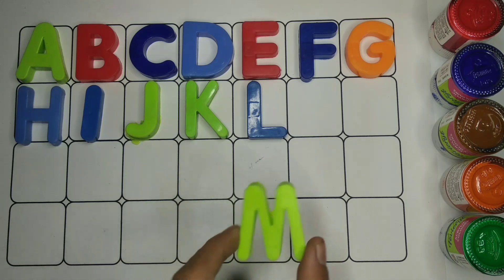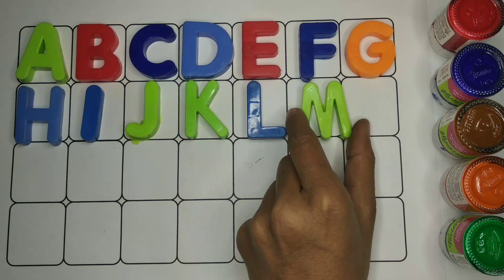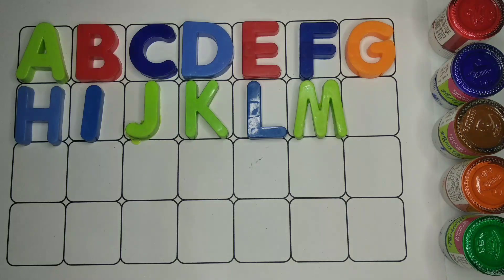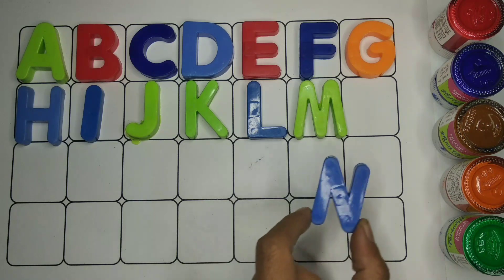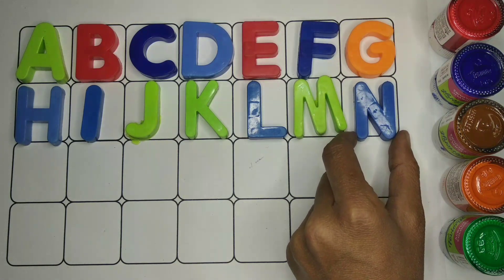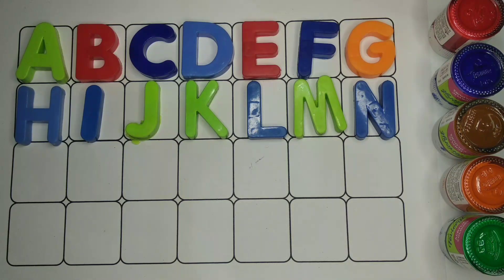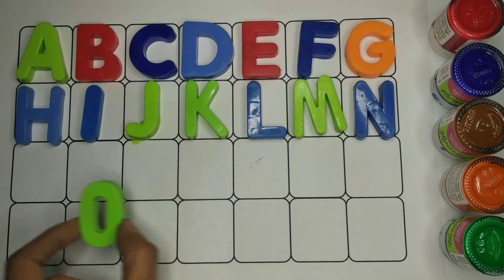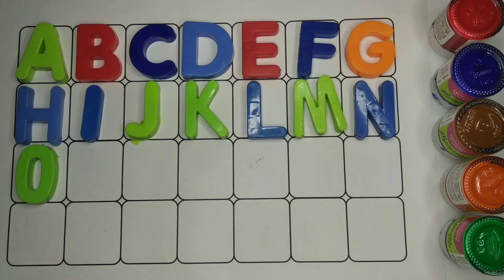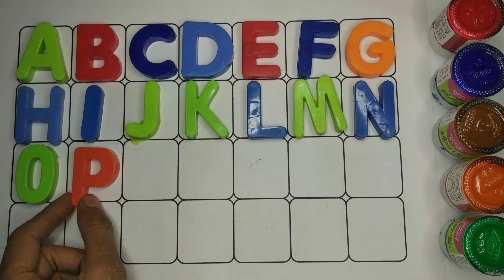M, M for mango. N, N for nest. O, O for orange. P, P for parrot.